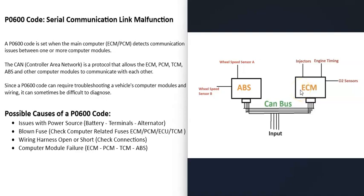For example, your vehicle may have an engine control module or ECM, which controls all engine functions like the injectors or the timing. There could also be an ABS control module controlling things like the wheel speed sensors. All these control modules need to communicate with each other.